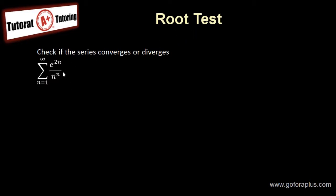Now, what happens is we have to extract the exponent n outside, so I get e to 2 over n to the power of n.